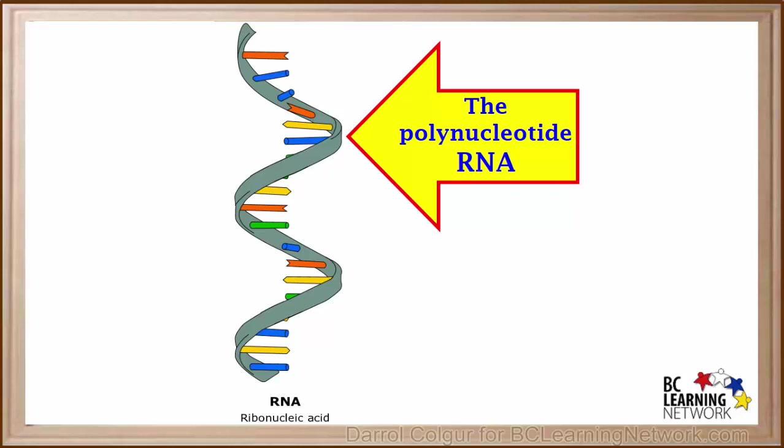Like DNA, RNA is a polynucleotide, a very long molecule made of smaller units called nucleotides. This diagram shows only a very small portion of an RNA molecule.